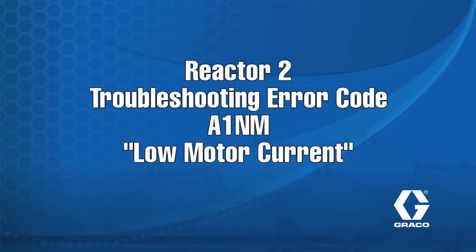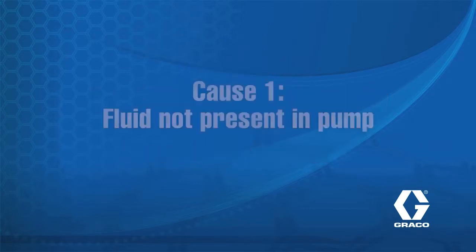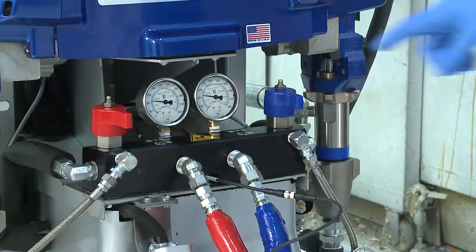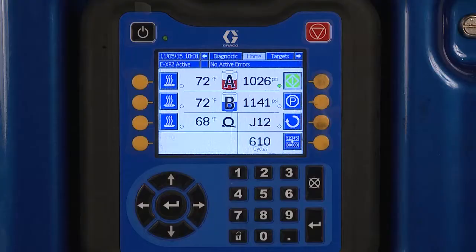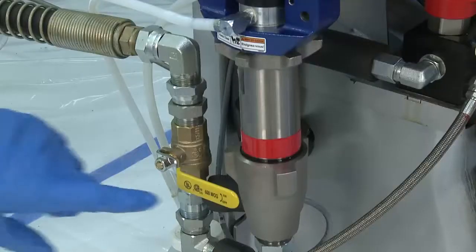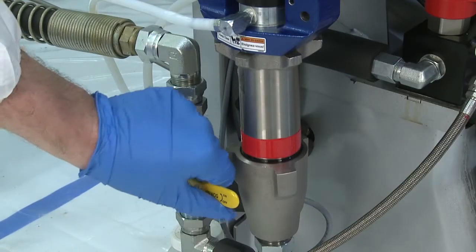The following are possible causes of this error code. Cause 1: Fluid not present in pump. Check for pressure on pressure gauges and the display to verify fluid is present. Also verify fluid inlet valves are open.